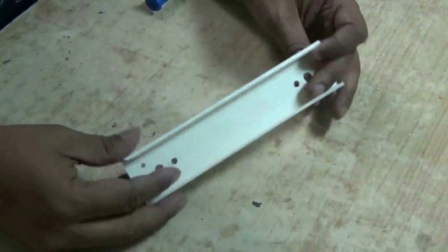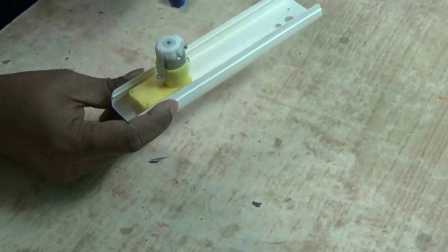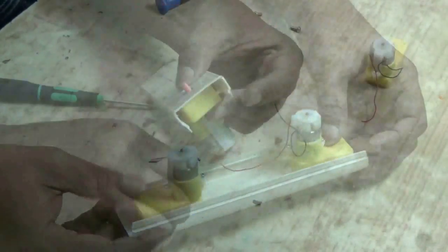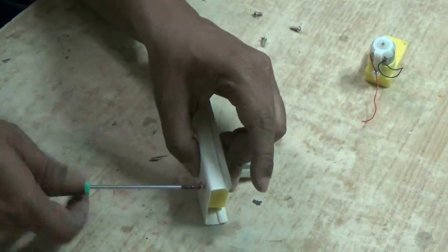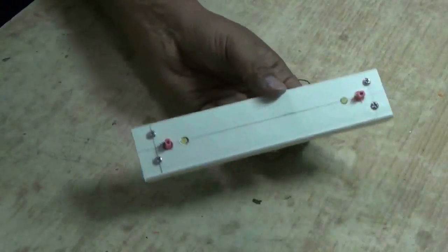Drill holes to fit the motor on both end of the frame. Fix the motor with the motor frame using screws. Like this.